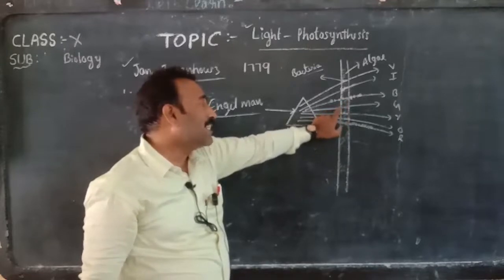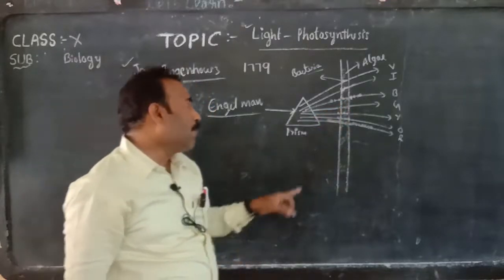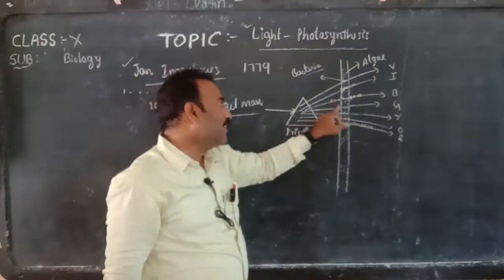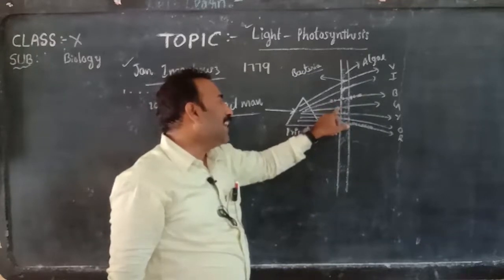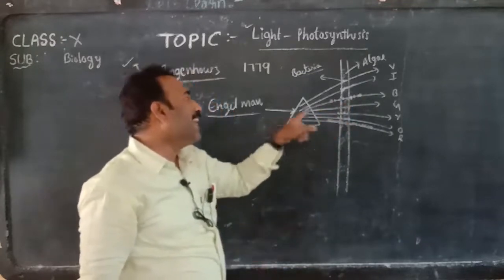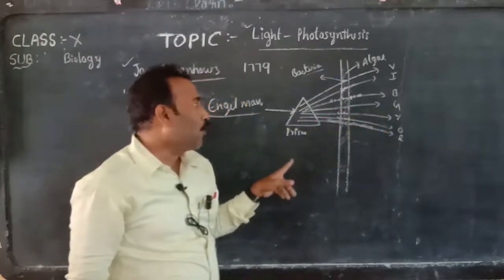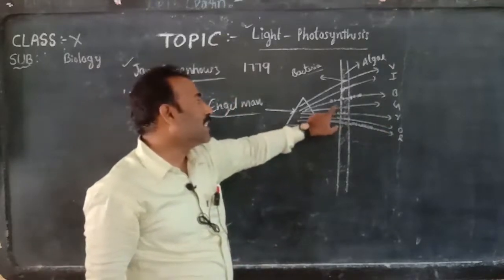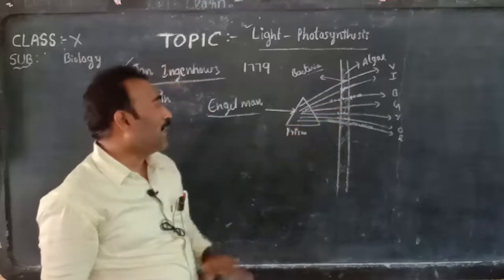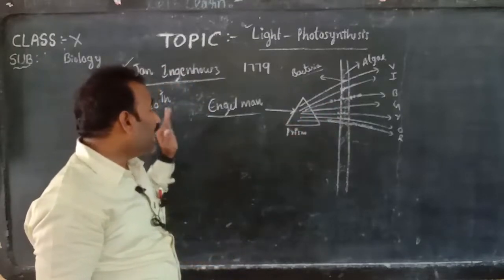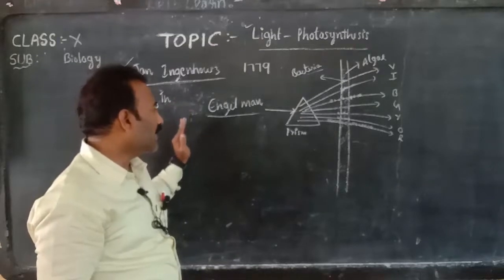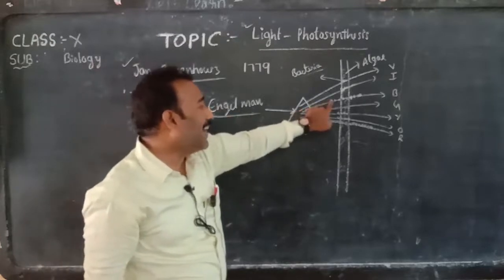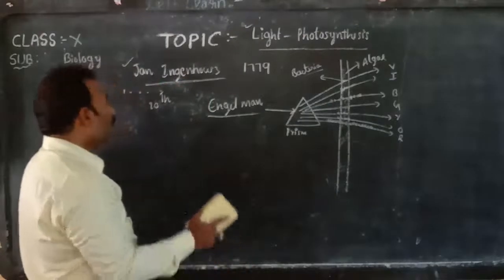In the presence of green light, the rate of photosynthesis is zero, because chlorophyll reflects the green light. So by this experiment we understood that the more suitable lights for photosynthesis are blue light and red light.